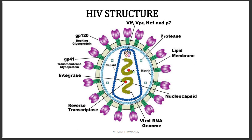Looking at a more detailed structure, we first have the envelope, which is the lipid bilayer on the outside. We then have glycoproteins — abbreviated as GP — which have two parts. The part embedded in the membrane is a transmembrane or integral protein called GP41, where 41 represents its molecular weight.